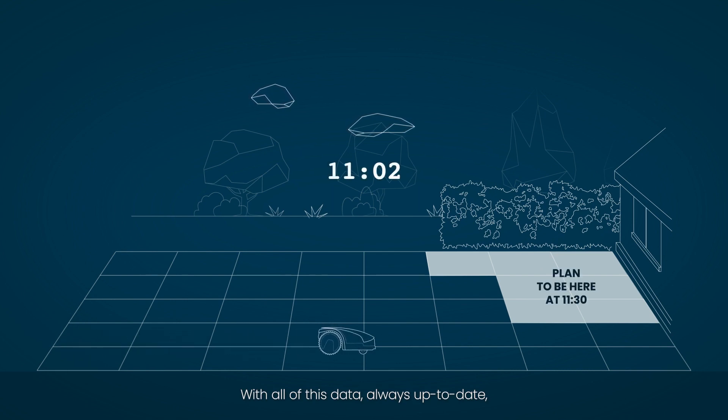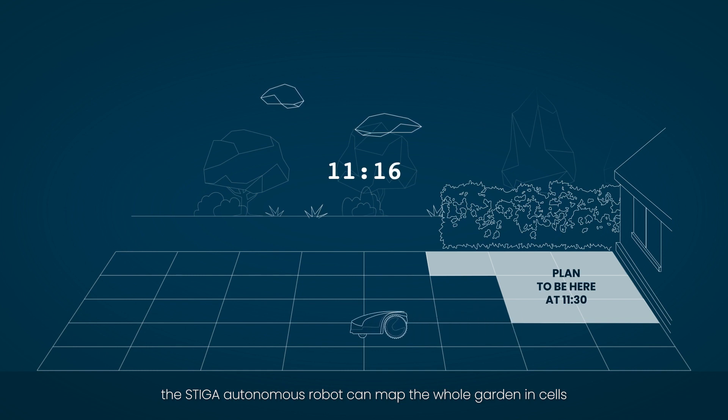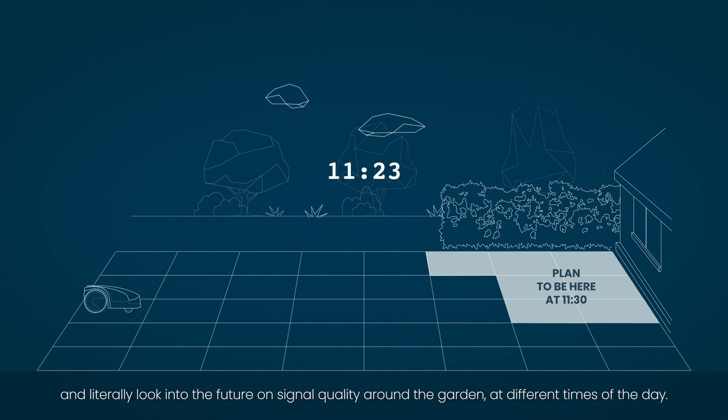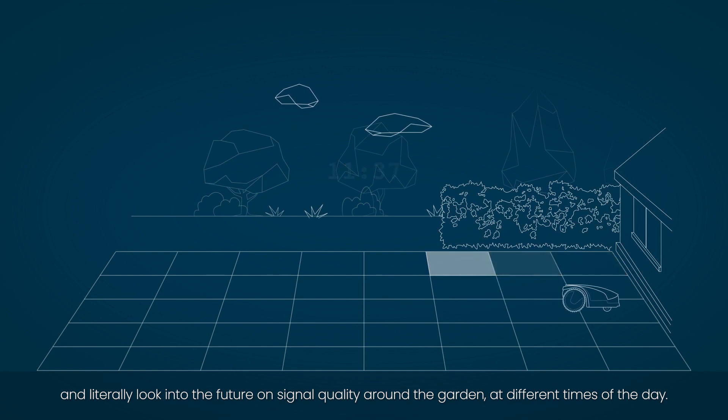With all of this data, always up to date, the Steger Autonomous Robot can map the whole garden in cells, and literally look into the future on signal quality around the garden, at different times of the day.